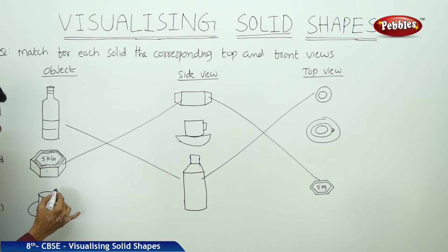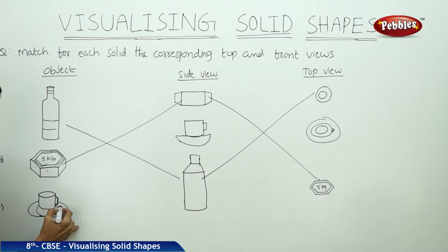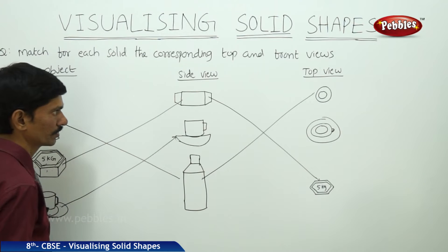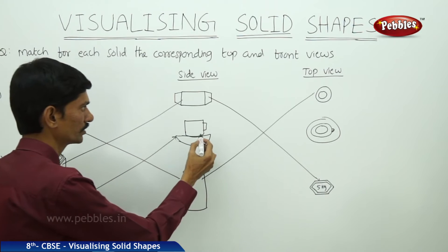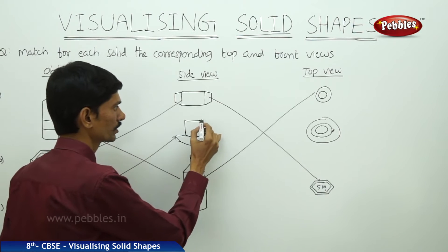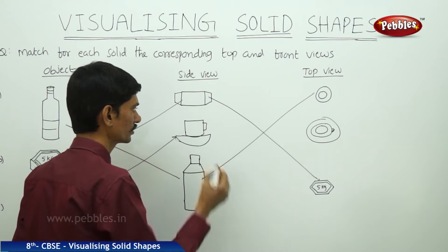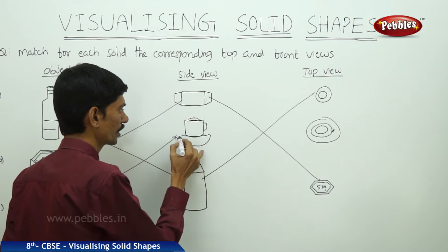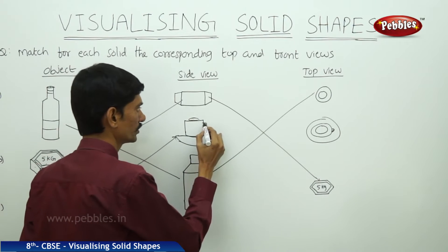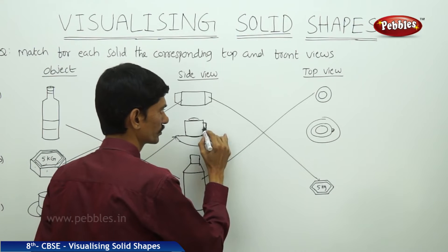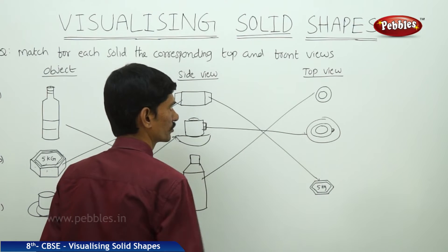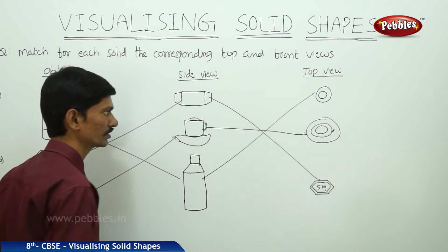For the third figure — the cup and saucer — we can take the side view of this figure. From the top, we can see two or three concentric circles: two concentric circles for the cup and the saucer below. So we match these with the three concentric circles. This is the top view of the cup and saucer.